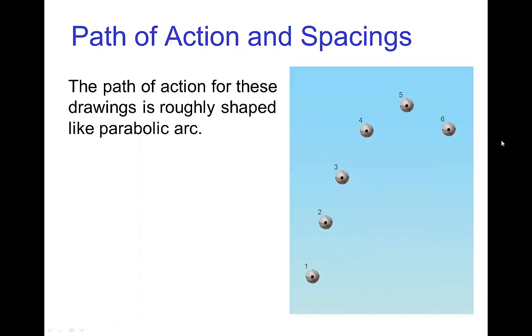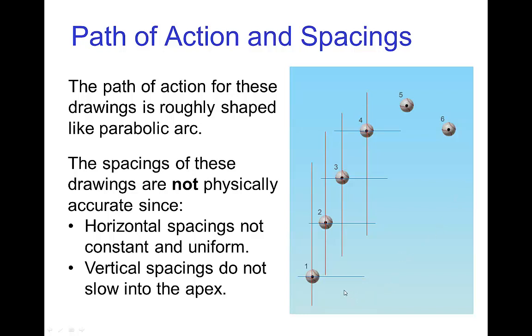Now one last thing, the shape of the path of action could be more or less correct, but that doesn't mean that the timing and spacing is correct. So, in this illustration, we see the path of action looks roughly like a parabolic arc, but when we check the spacings, we see that the horizontal spacings are not uniform. In fact, the ball is slowing out towards the right. And the vertical spacings, which should be slowing in as the ball is rising, are actually rather uniform. So, this is an example where the shape of the path of action is more or less okay, but the spacings are not correct, or at least not physically believable.